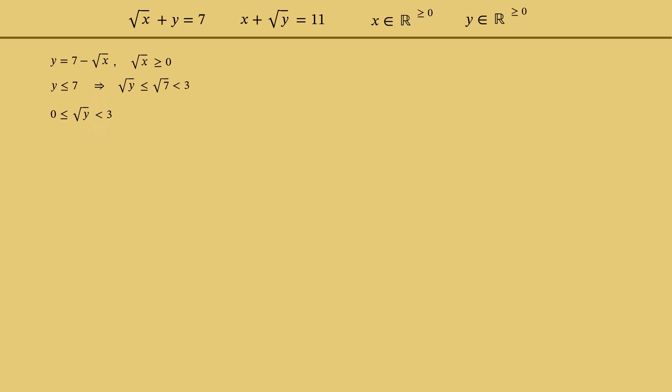Now, let's rewrite the second equation of the system: x equals 11 minus square root of y, and apply to it the inequality for the square root of y. We multiply the inequality by negative 1, so the inequality signs are changed to the opposite. Then we add 11, and get the expression for x in the middle. Therefore, x is more than 8, and no more than 11.